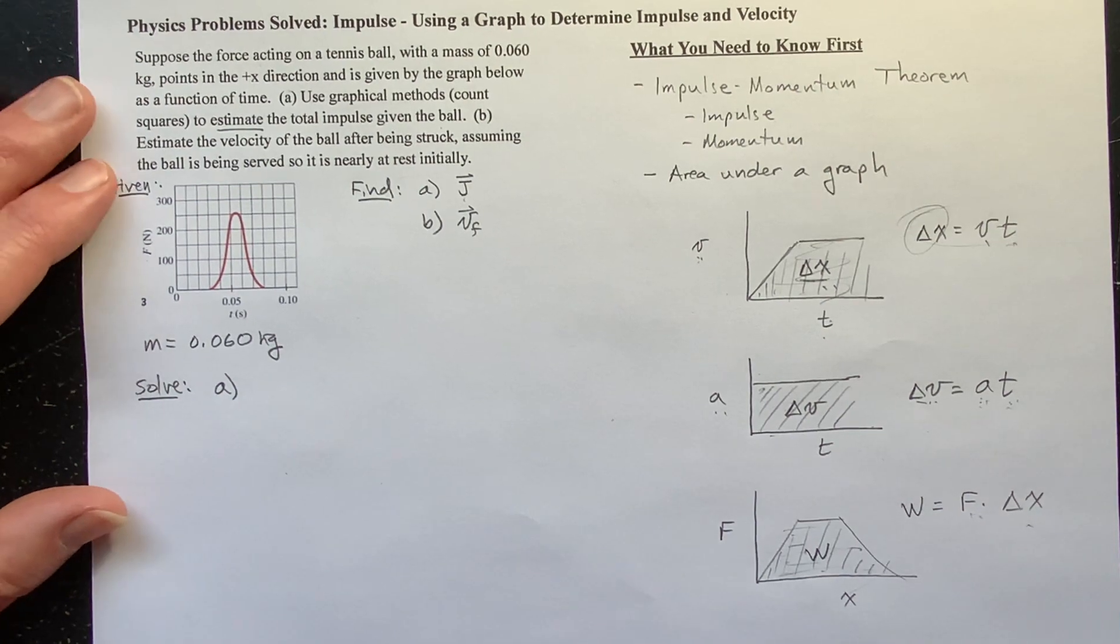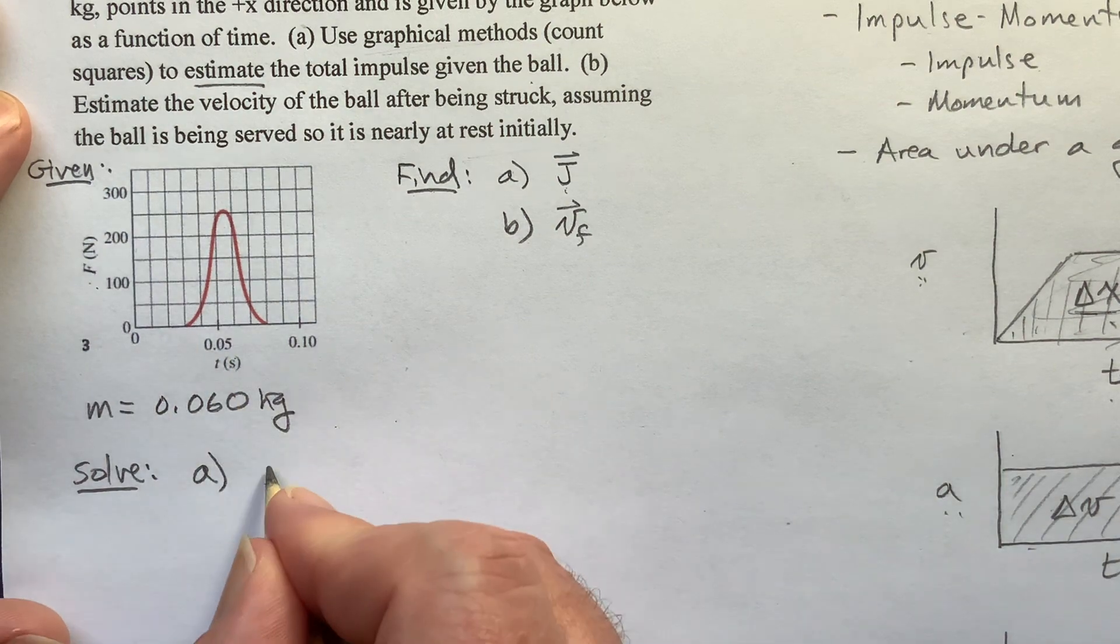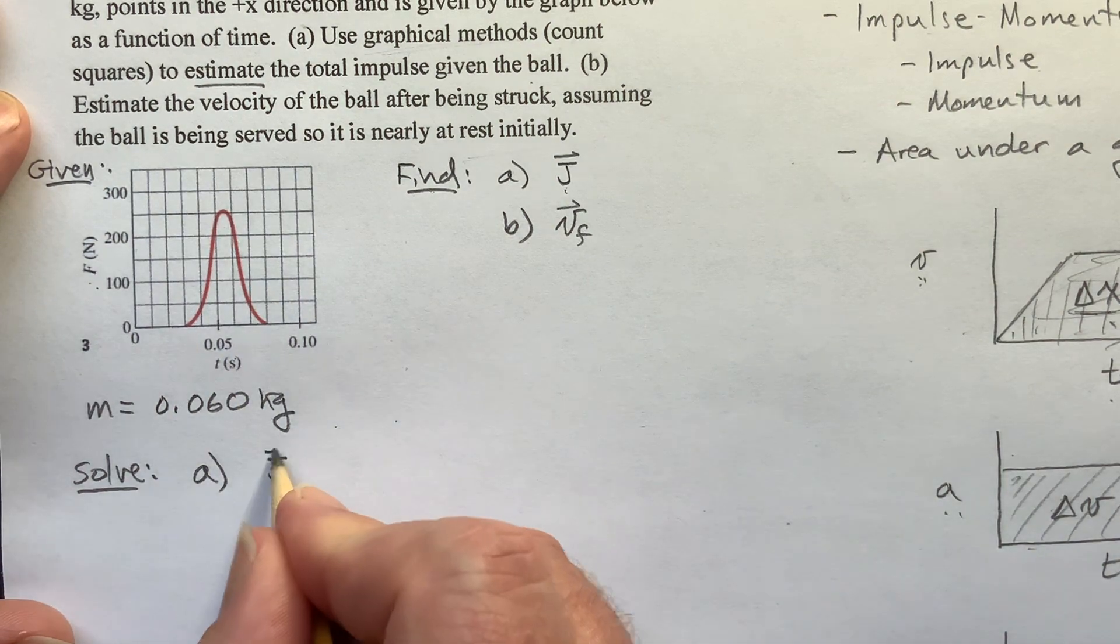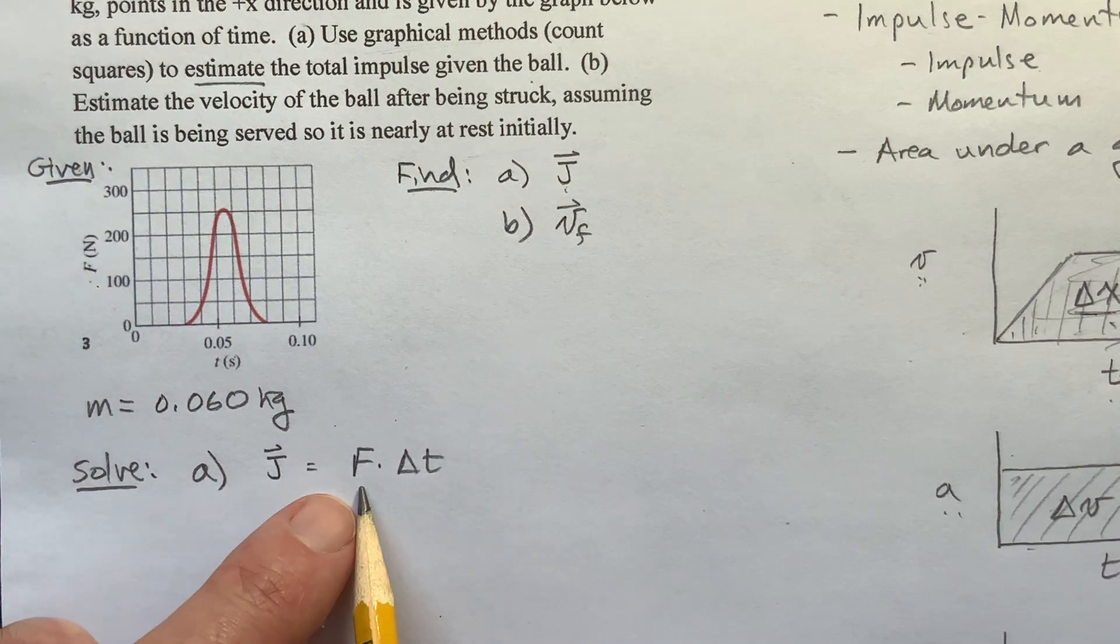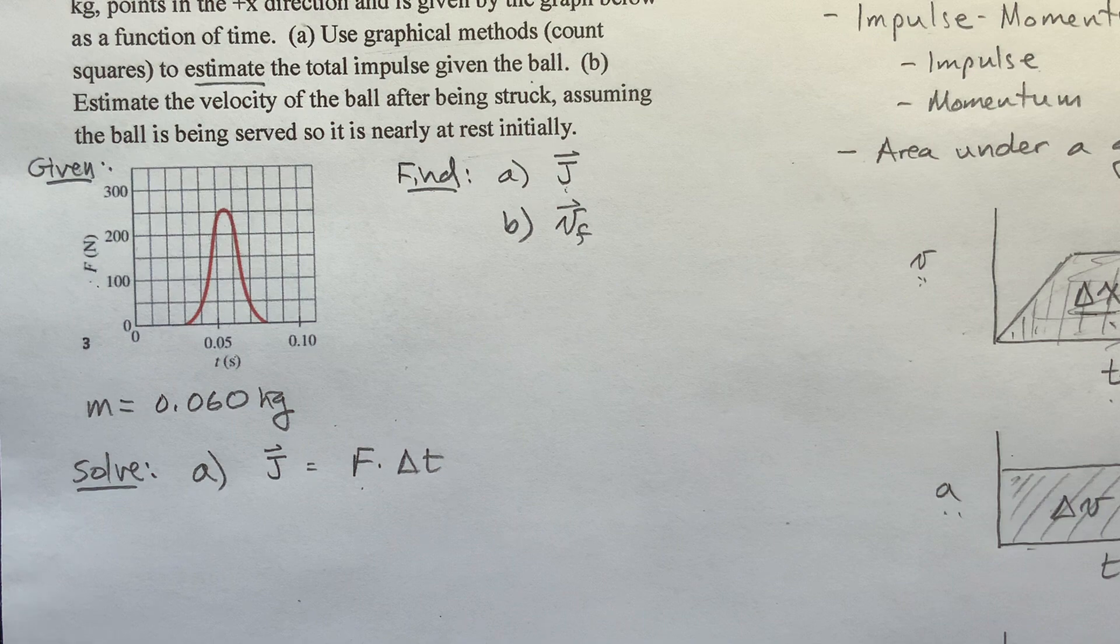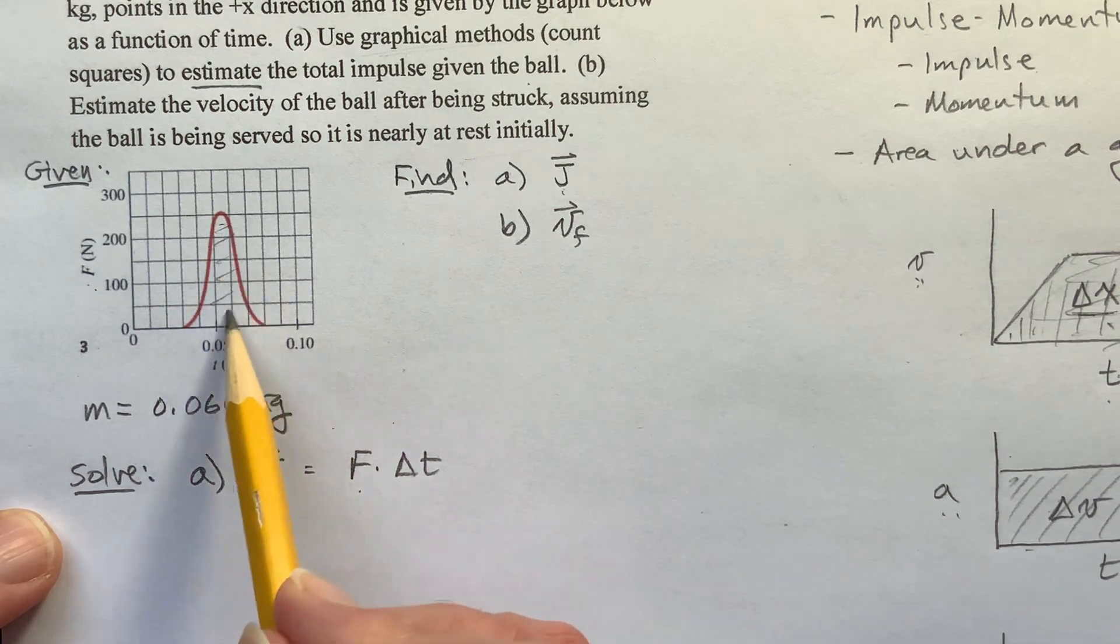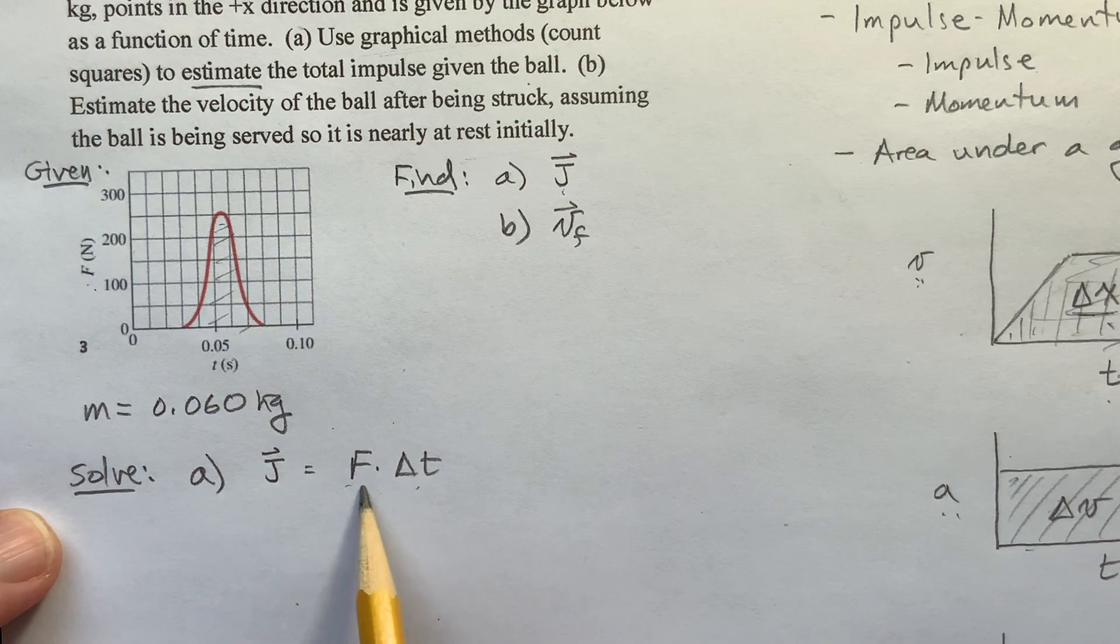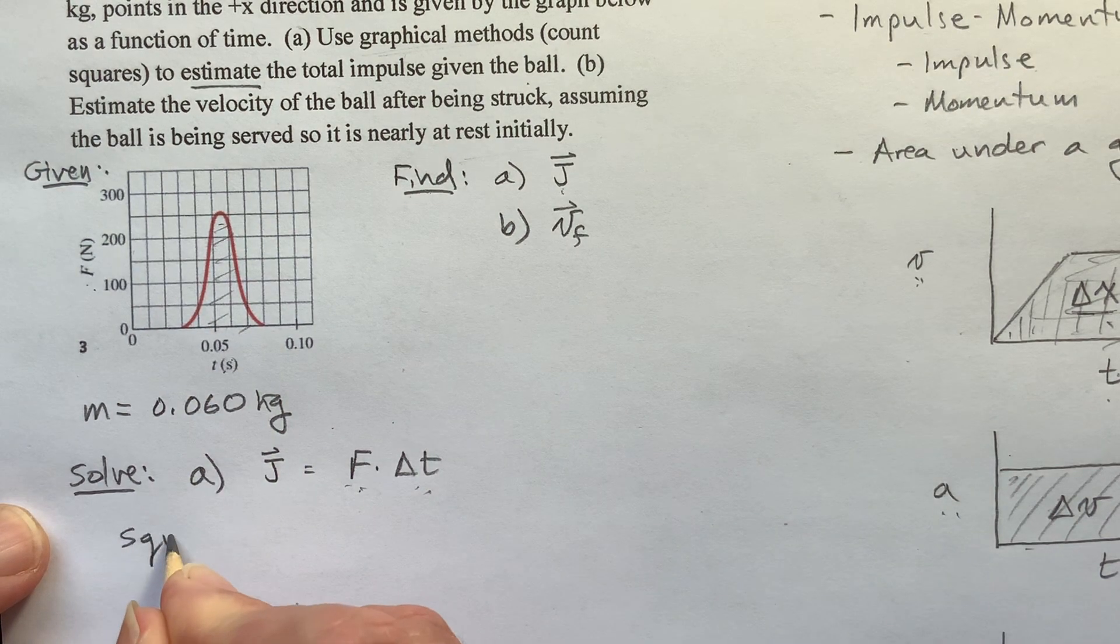So any time you have a quantity that is defined to be the product of two other quantities, then the area underneath the graph where you plot one as a function of the other is that third quantity. And this is kind of the foundations of integral calculus, by the way. Now for this graph, we have force times time, and we know that impulse is equal to force times time.